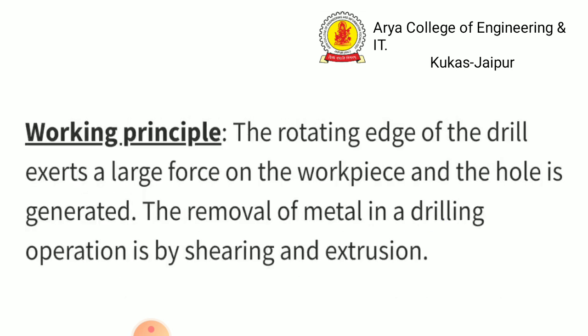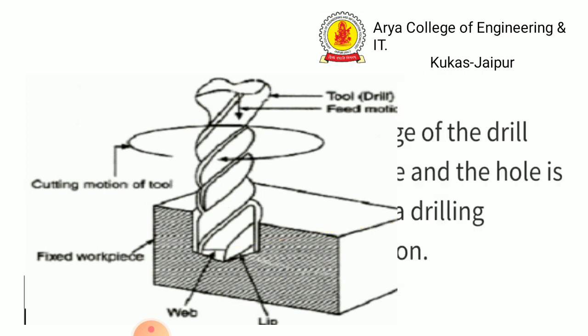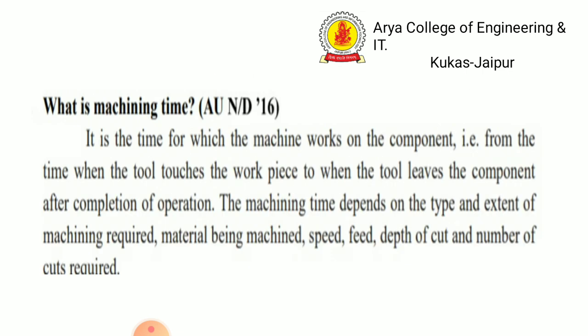The working principle of drilling operations: the tool, called the drill, has a feed mechanism for downward motion. The cutting motion involves the tool revolving against the fixed workpiece. The rotating edge of the drill exerts a large force on the workpiece and the hole is generated during the operation. The removal of metal in drilling is by shearing and extrusion.